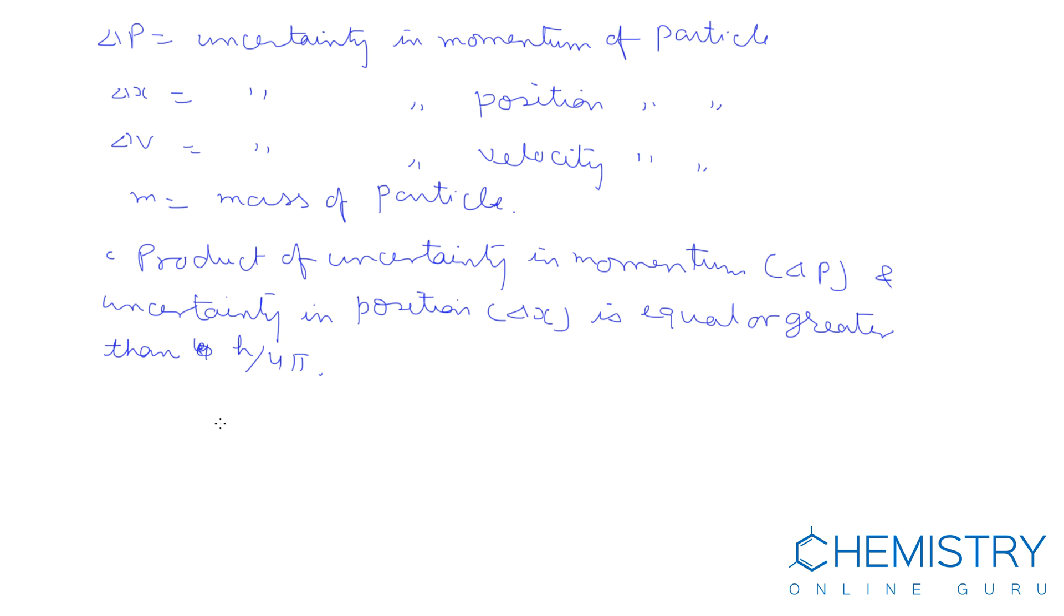If position of a small particle is determined accurately, then delta x is small. Therefore, uncertainty in velocity, that is delta v, should be high.